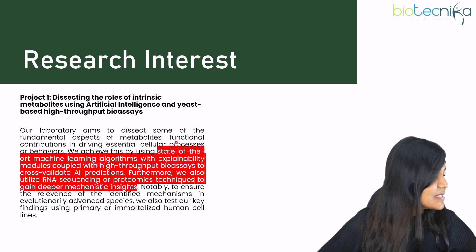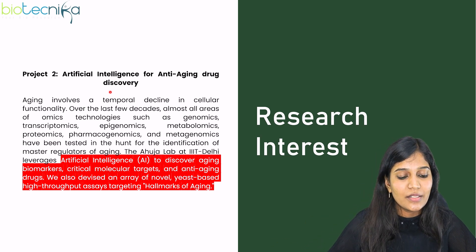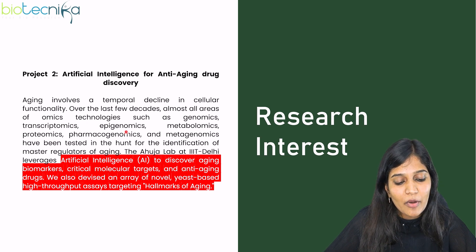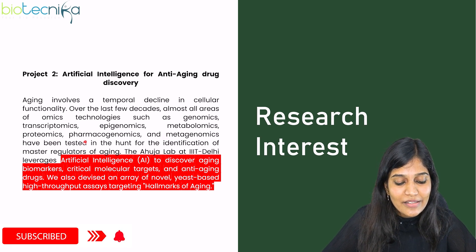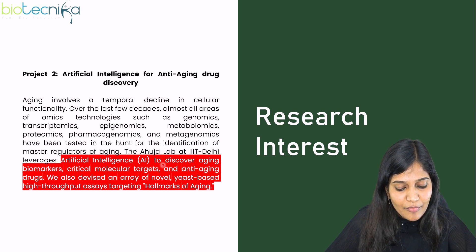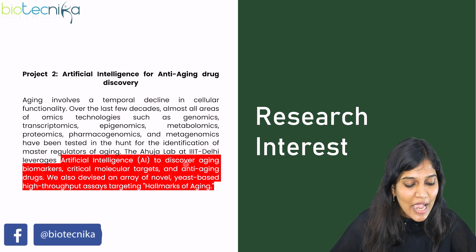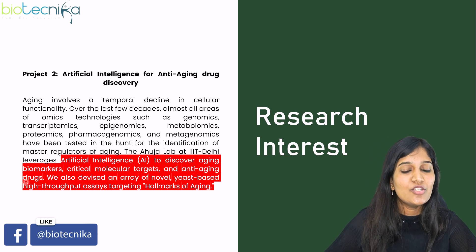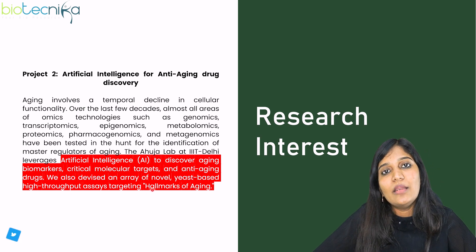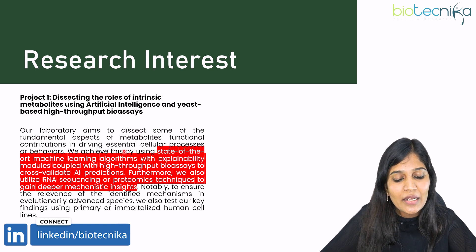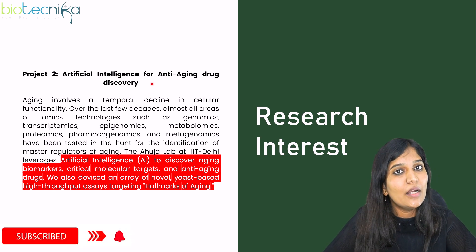The second project focuses on anti-aging drug discovery using AI. They discuss the implications of omics technologies — such as genomics — as master regulators of aging. This lab prominently uses artificial intelligence to discover aging biomarkers, critical molecular targets, and anti-aging drugs. They use yeast-based high-throughput assays targeting the hallmarks of aging — one focus is on metabolites and their function with AI, and the second is using AI for anti-aging drug discovery.